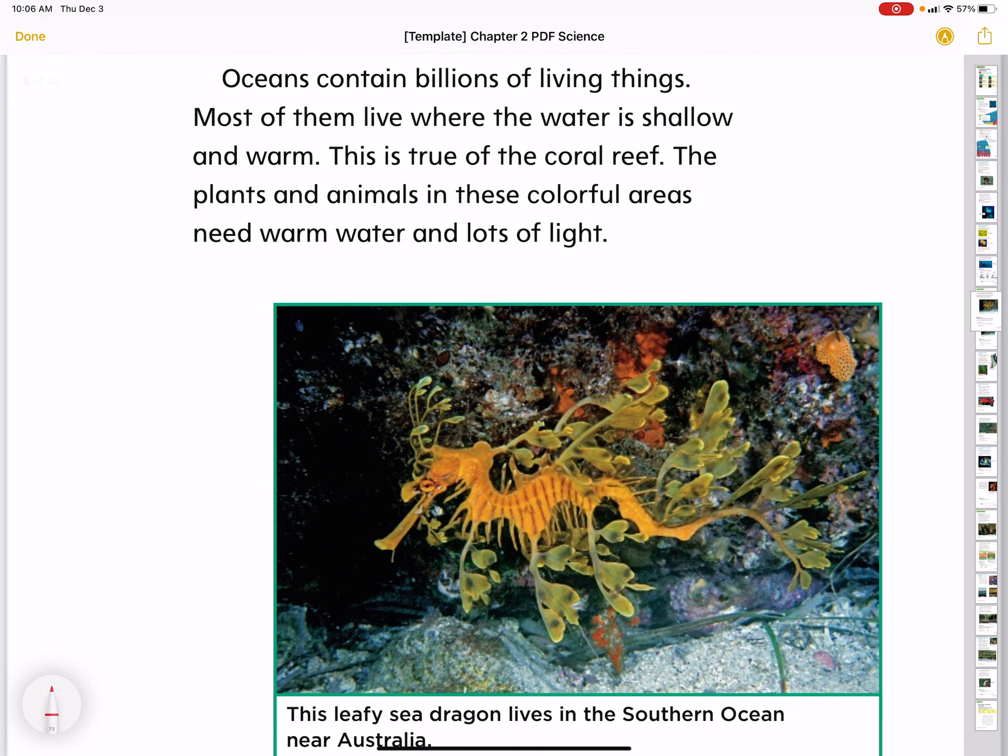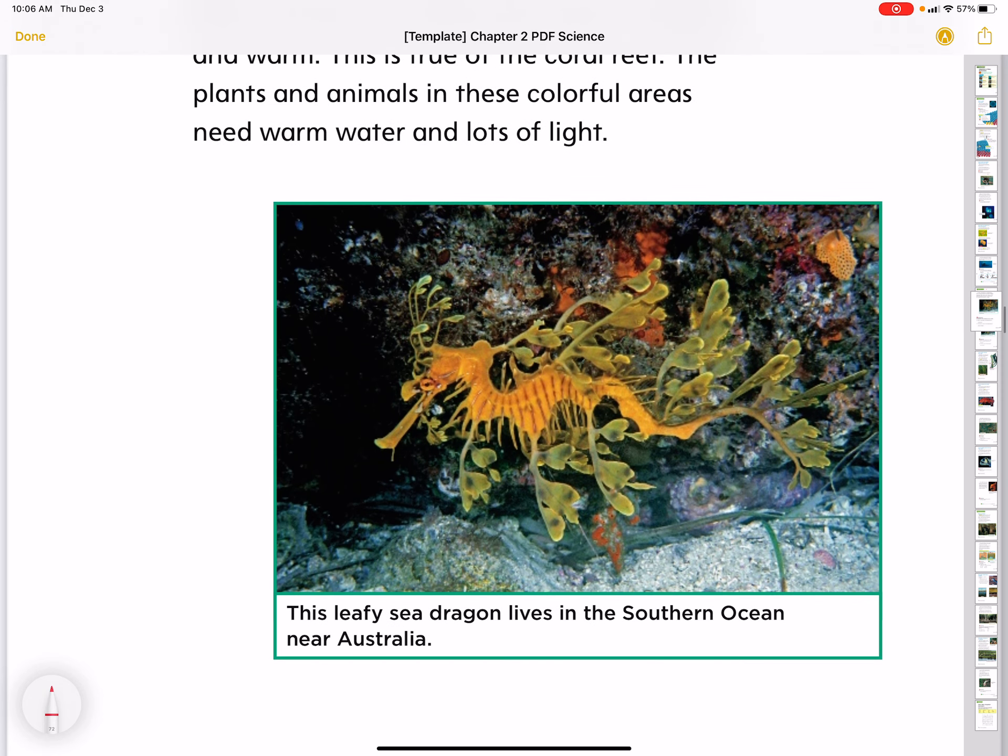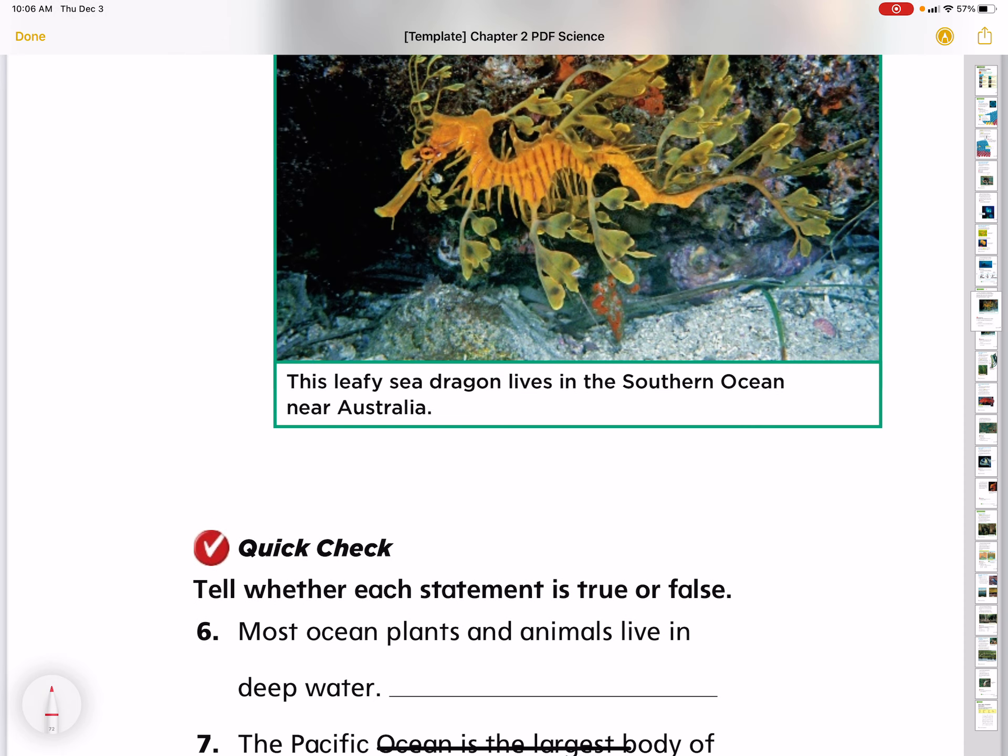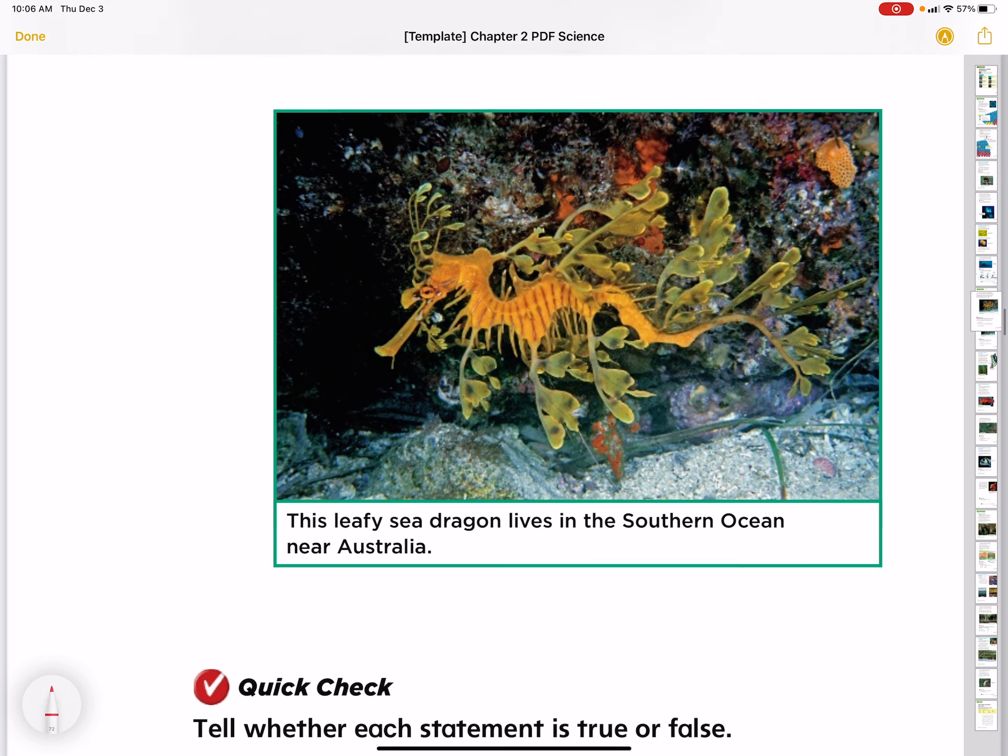Oceans contain billions of living things. Most of them live where the water is shallow and warm. This is true of the coral reef. The plants and animals in these colorful areas need warm water and lots of light. This leafy sea dragon lives in the southern ocean near Australia. He's kind of cool looking.